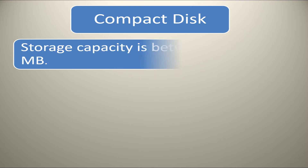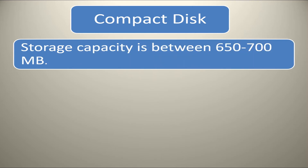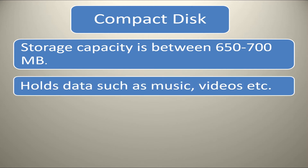A compact disk or a CD is a portable disk having data storage capacity between 650 to 750MB. It can hold large amounts of information such as music, full motion videos, and text.